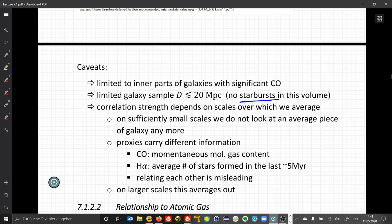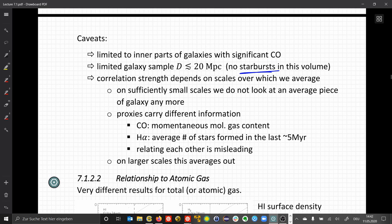The correlation strength depends somewhat on scales over which we average. We have to be careful because on sufficiently small scales we start to look at individual molecular clouds that might significantly deviate from the average properties of that galaxy. We also have to consider that depending on the proxies we use to derive the molecular gas, different proxies might carry different information. For example, the CO emission is related to the momentaneous, the actual molecular gas content now.